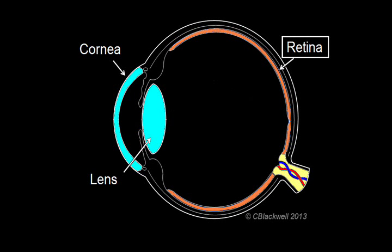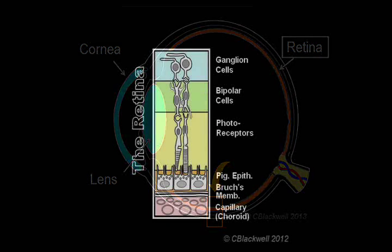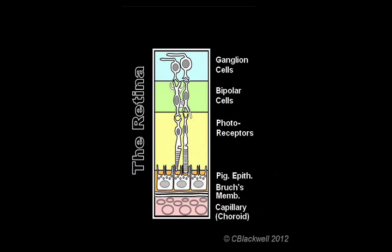Now let us talk about the retina, the film in the camera. If we take a piece of retina and put it under a microscope, we would see the following cell layers. It's a little unexpected because light comes in through the top, passes through several layers of nerve cells, before it reaches the photoreceptors, the rods and cones. Beneath the rods and cones is a layer of pigment cells, which are important because they support the metabolism of the photoreceptors, and the pigment cells absorb stray light within the eye.